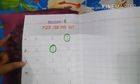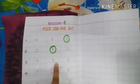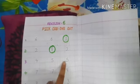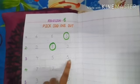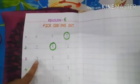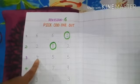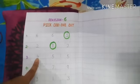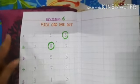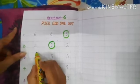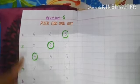Come to the third point. Numbers 5, 5 and 4. Both 5s are the same. Which one is the odd one out? 4. So you have to circle number 4.